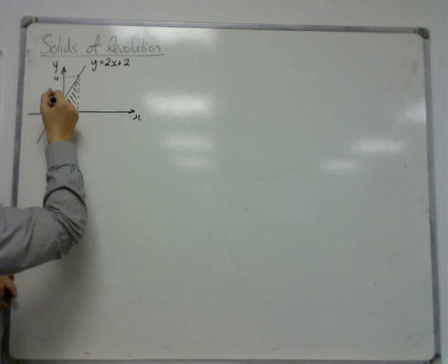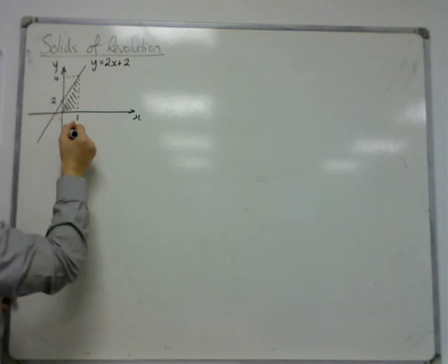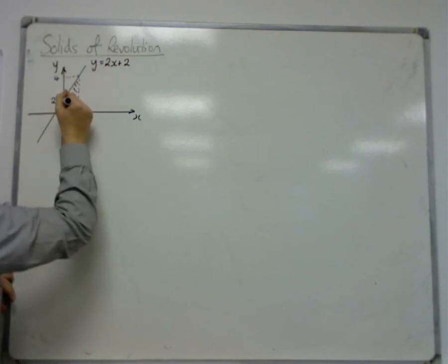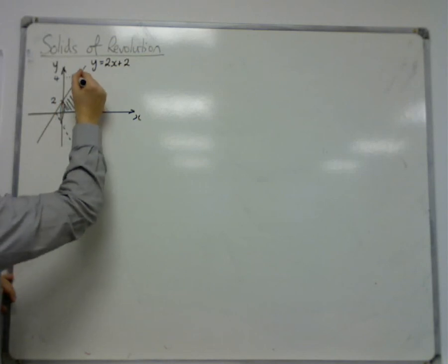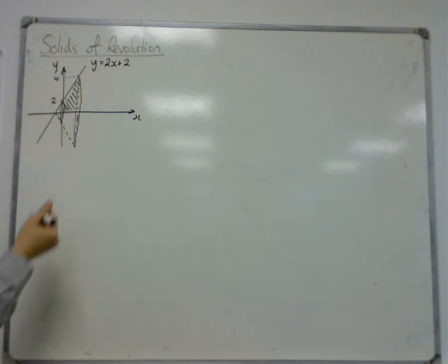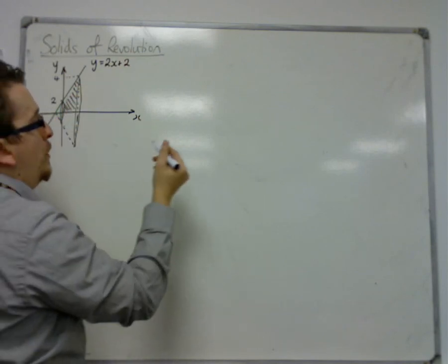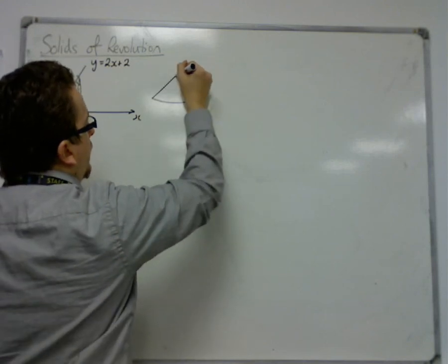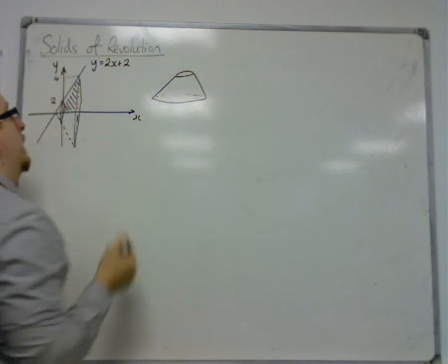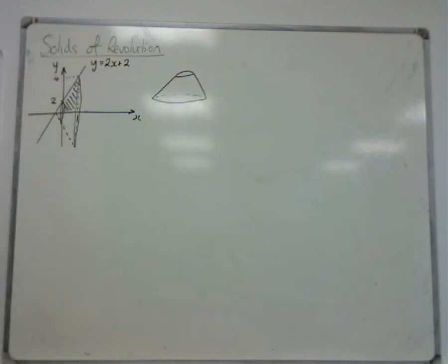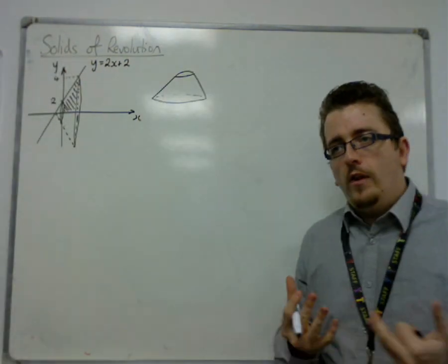So it's going to look something, if I draw this more accurately, it's going to look like it's been rotated round. So it's kind of, if you looked at its side on, it would look something like that. So like a cone that's had its top chopped off. And what we're going to do is we're going to try and work out the volume of this shape.